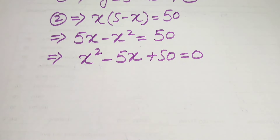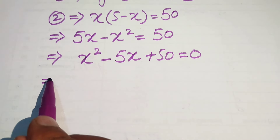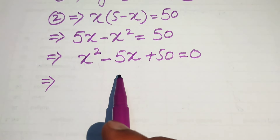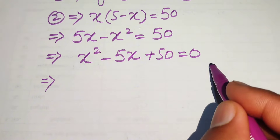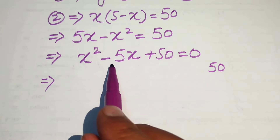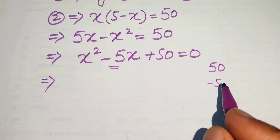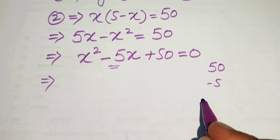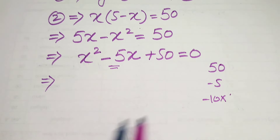You can also solve this problem by the factorization method — we can make factors of this equation. We need two numbers whose product is 50 and whose sum or difference gives minus 5. Those two numbers are minus 10 and 5.